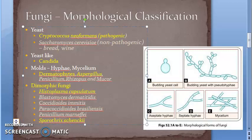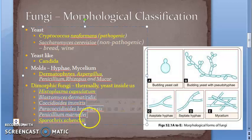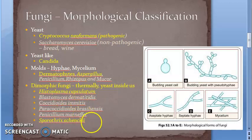Now let's move on to dimorphic fungi. These exist as molds in the environment at ambient temperature, and as yeasts in the tissues inside the human body - because it's warmer there, they convert to yeast form. These are called thermally dimorphic fungi. Important examples include Histoplasma capsulatum and Sporothrix schenckii.